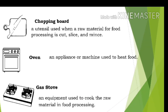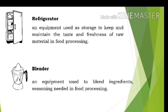Chopping board, a utensil used when raw material for food processing is cut, sliced, and minced. Oven, an appliance or machine used to heat food. Gas stove, an equipment used to cook the raw material in food processing. Refrigerator, an equipment used as storage to keep and maintain the taste and freshness of raw material in food processing. Blender, an equipment used to blend ingredients and seasoning needed in food processing.